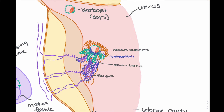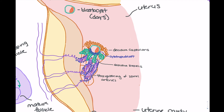To finish this diagram, we can label the straightening of the spiral arteries, the blood pooling within them, and the syncytiotrophoblasts — the differentiated trophoblastic cells that form the finger-like projections of the chorion. The chorion is the term used to refer to the combination of both the cytotrophoblasts and the syncytiotrophoblasts.